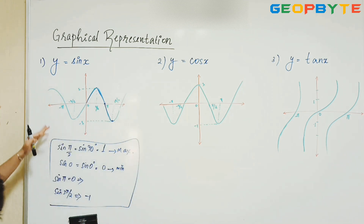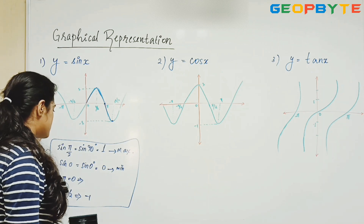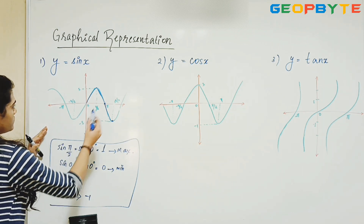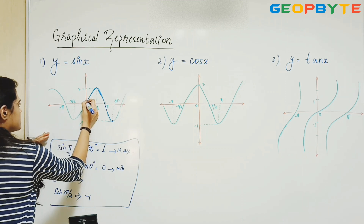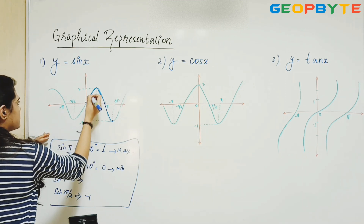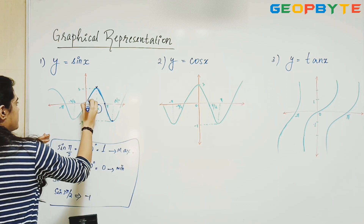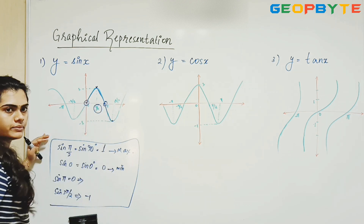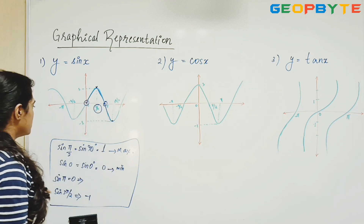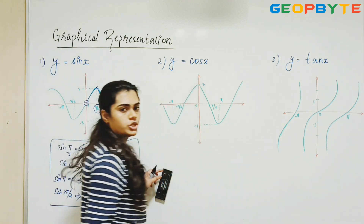We can form a sine wave — this is what we call a sine wave. We can find that there is a maximum value at π/2 and a minimum value at 3π/2, with zero crossings at 0 and π.